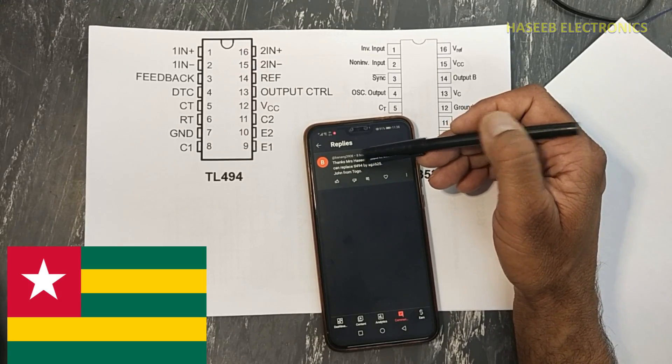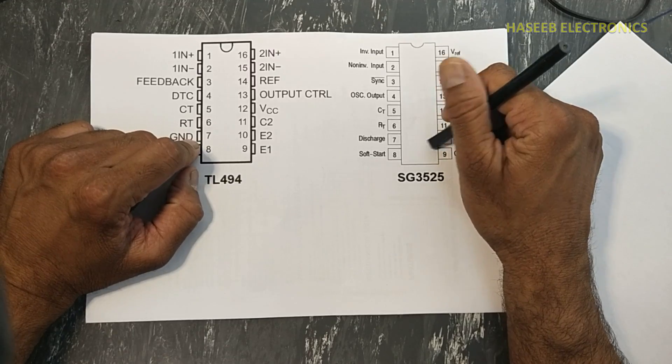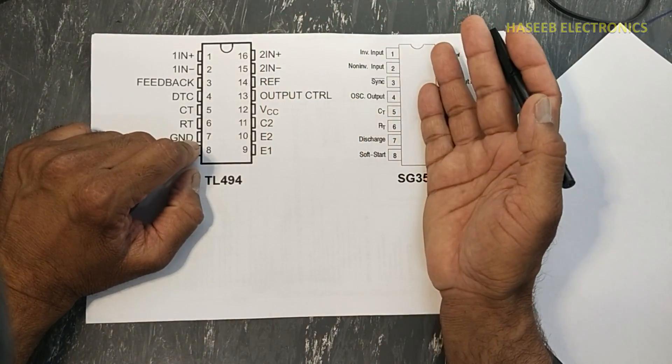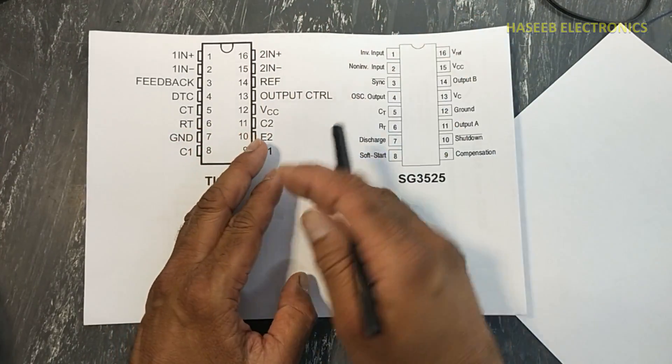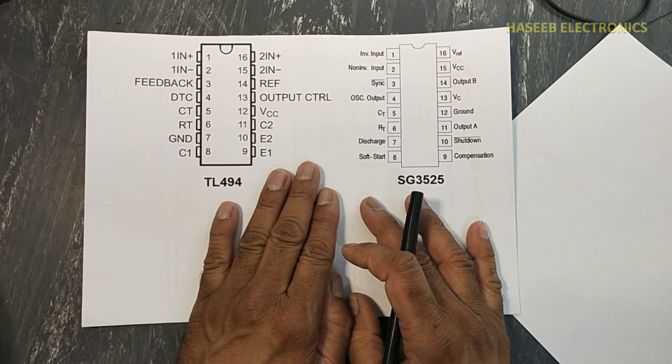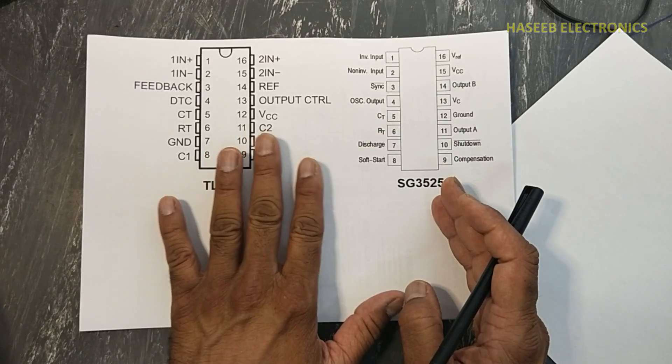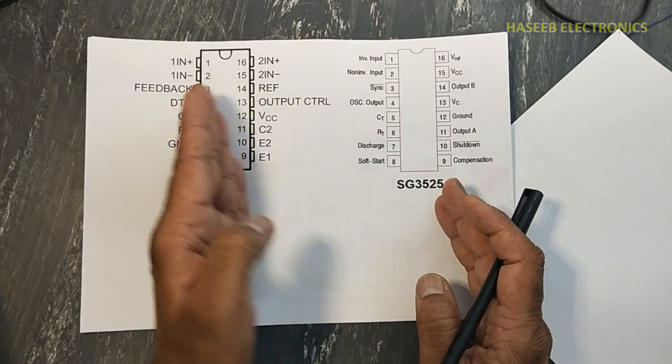TL494 and 3525 both are PWM controllers. These are fixed frequency oscillators that adjust duty cycle. We will compare the functions of both ICs. We will analyze what is here, what is there.